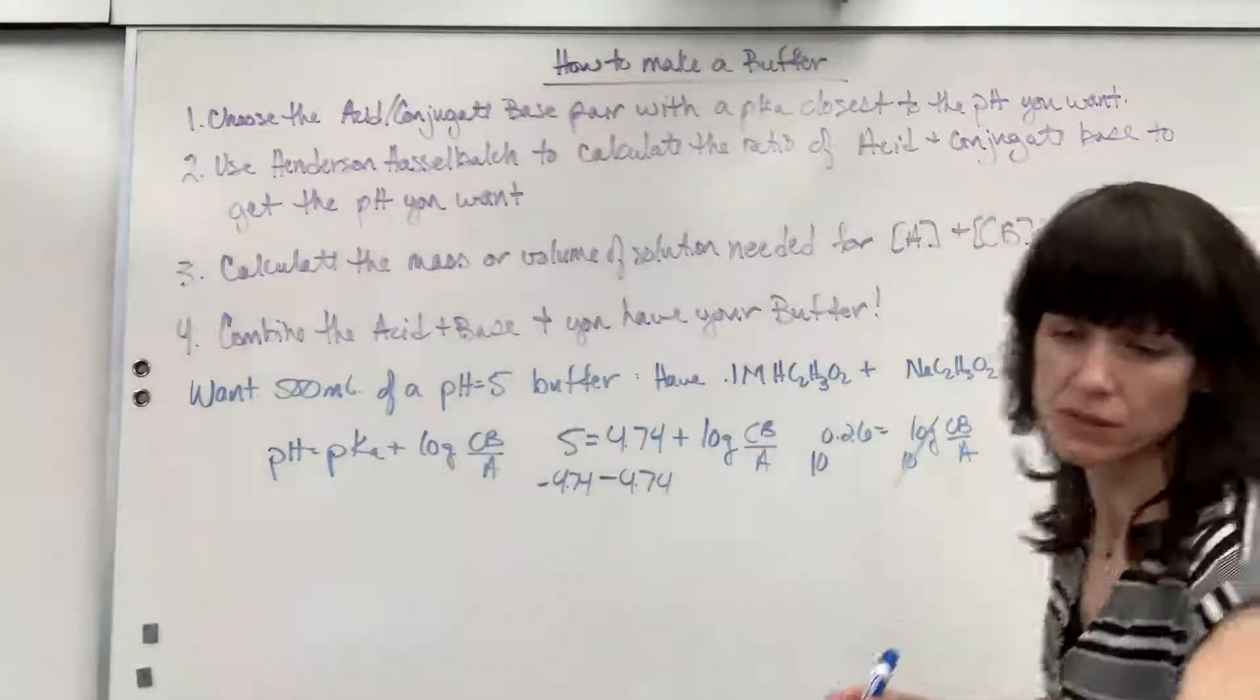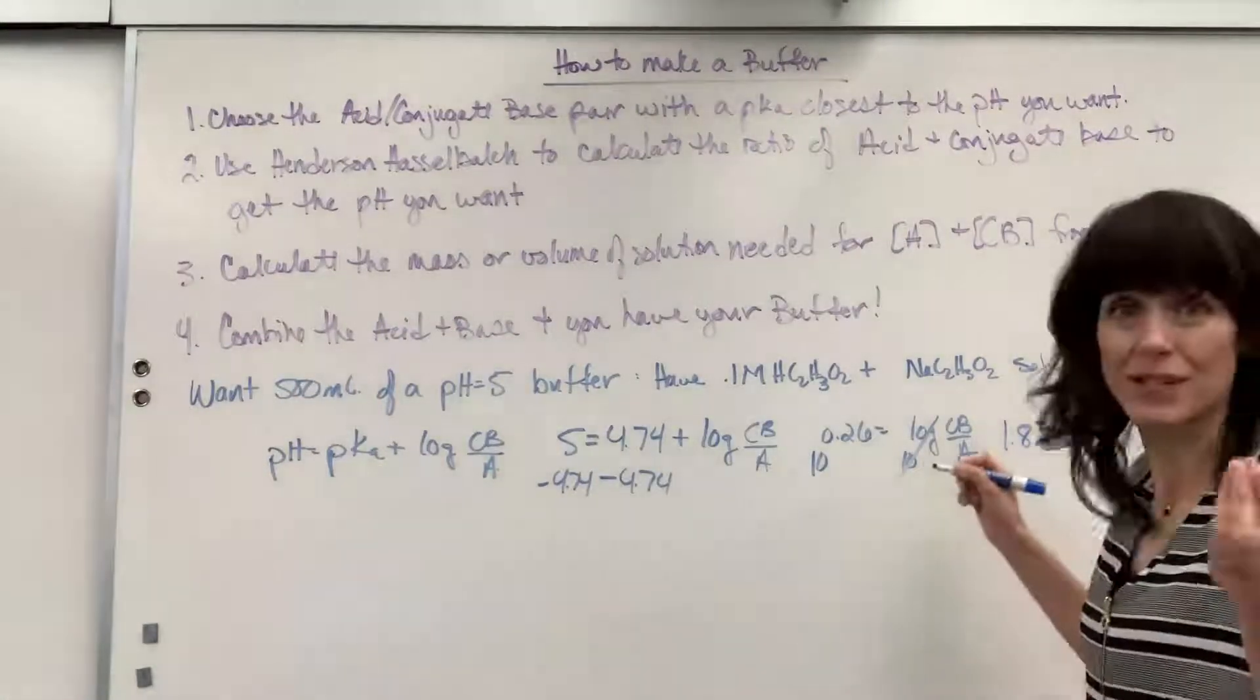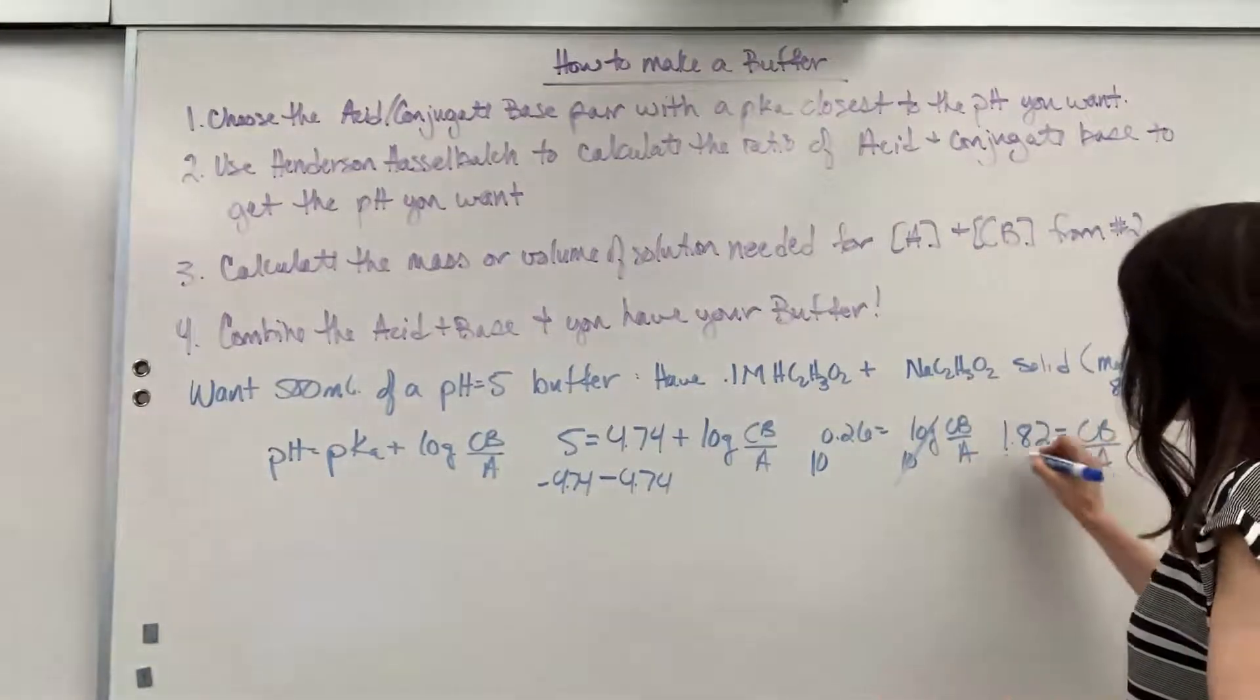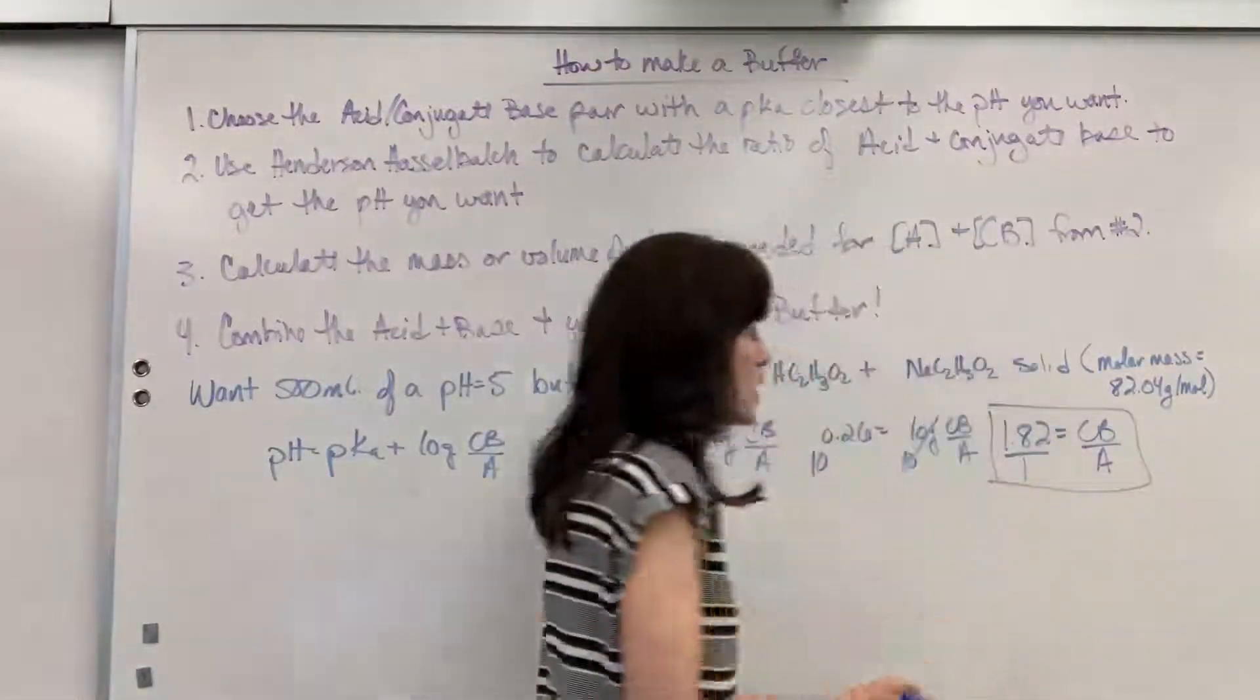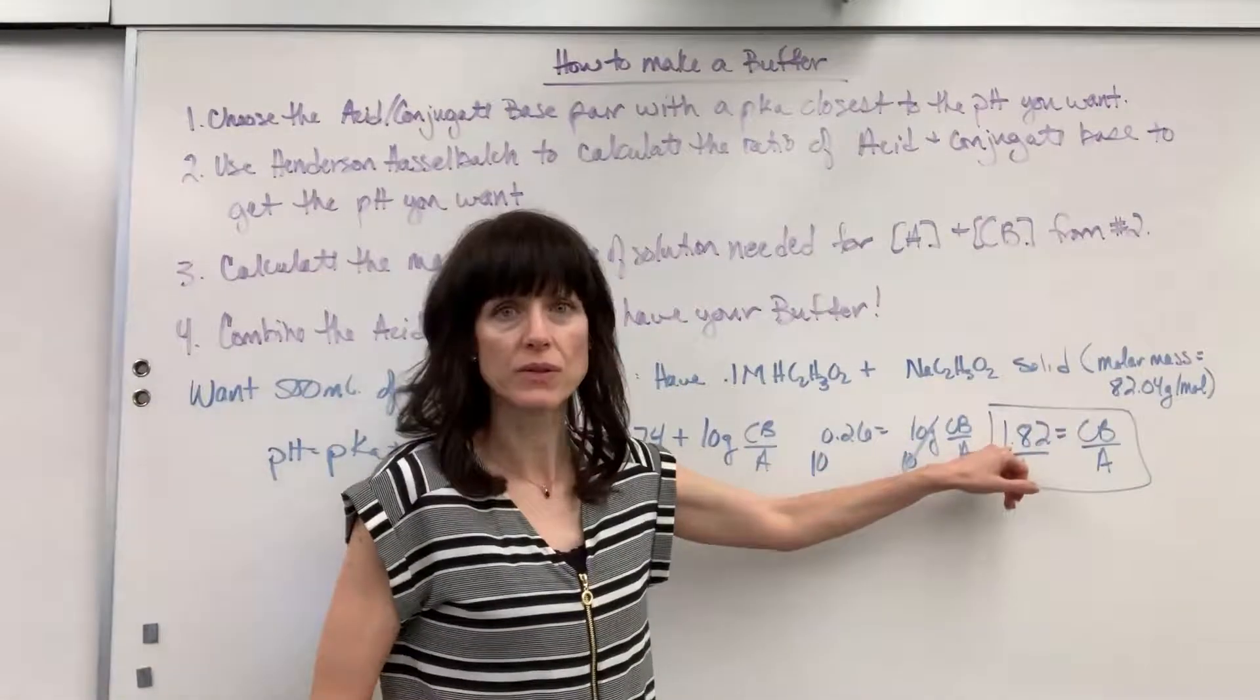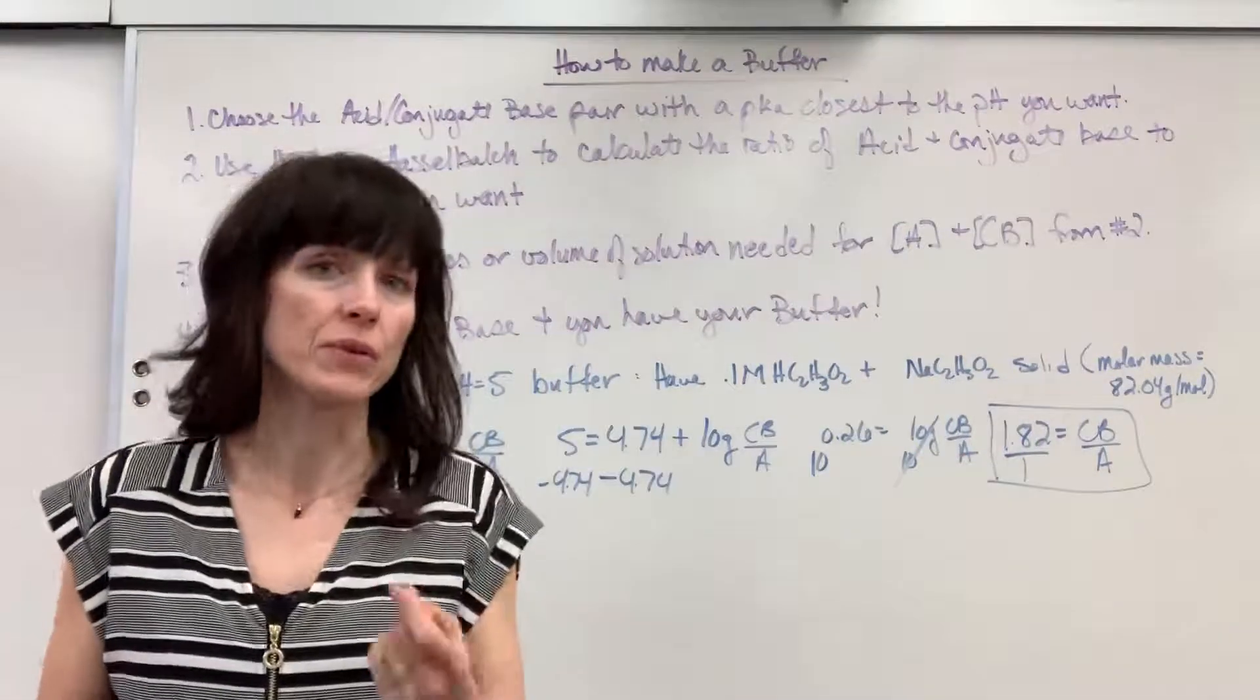That equals 1.82. 1.82 equals, here's my ratio, conjugate base over acid. So I'm going to put a 1. That 1.82 is understood to be over 1. There's my ratio. For every 1 mole of acid, I need 1.82 moles of that conjugate base. So step 2, done. We found the ratio.